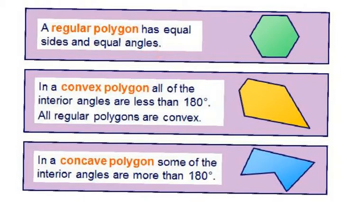So if you're told that's a regular pentagon or a regular quadrilateral, you know that every single side has the same measure — they're all congruent — and every angle is congruent with the same measure. Polygons are either going to be convex or concave. A convex polygon has all interior angles less than 180 degrees.